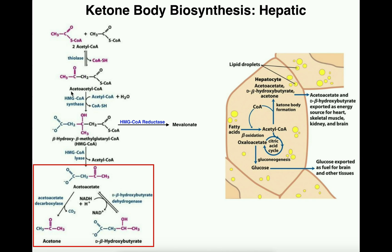Now we're going to convert acetoacetyl CoA into HMG CoA — beta-hydroxy-beta-methylglutaryl CoA. This is catalyzed by HMG CoA synthase, and it's going to require a third molecule of acetyl CoA, condensing that with acetoacetyl CoA with the loss of another CoA to give HMG CoA. Notice now we have six carbons in this molecule.